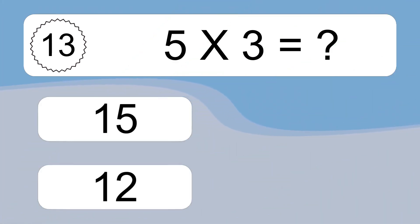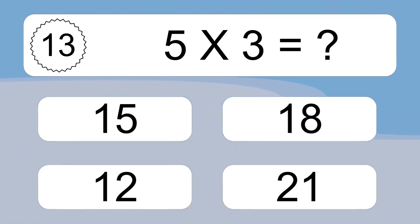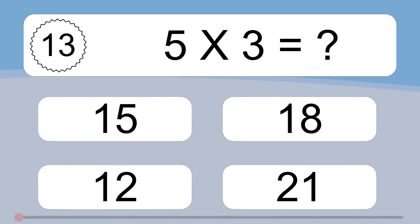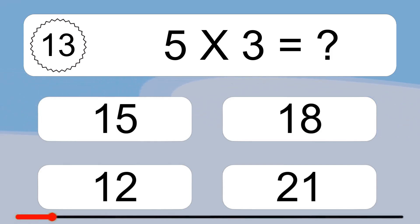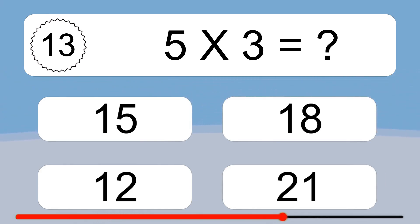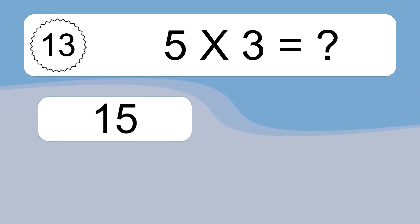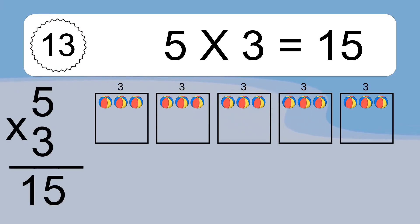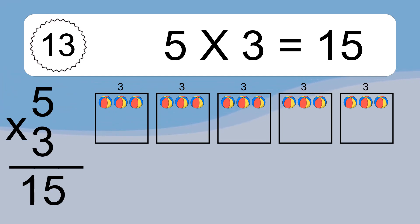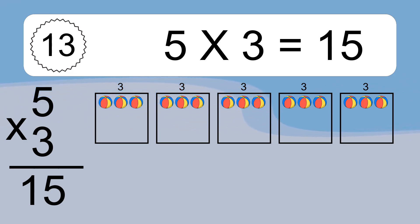5 times 3 equals what? 5 times 3 equals 15. We have 5 boxes, and each box has 3 colorful balls inside. If you count all the balls in all the boxes together, you will have 5 times 3 balls. This equals 15 balls.